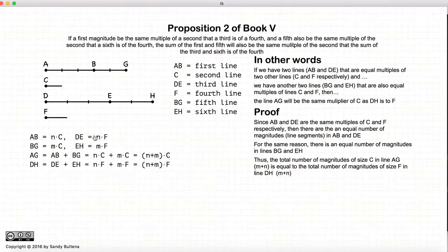So now, if we take that AG is equal to AB plus BG, well, AB is equal to N times C and BG is equal to M times C.